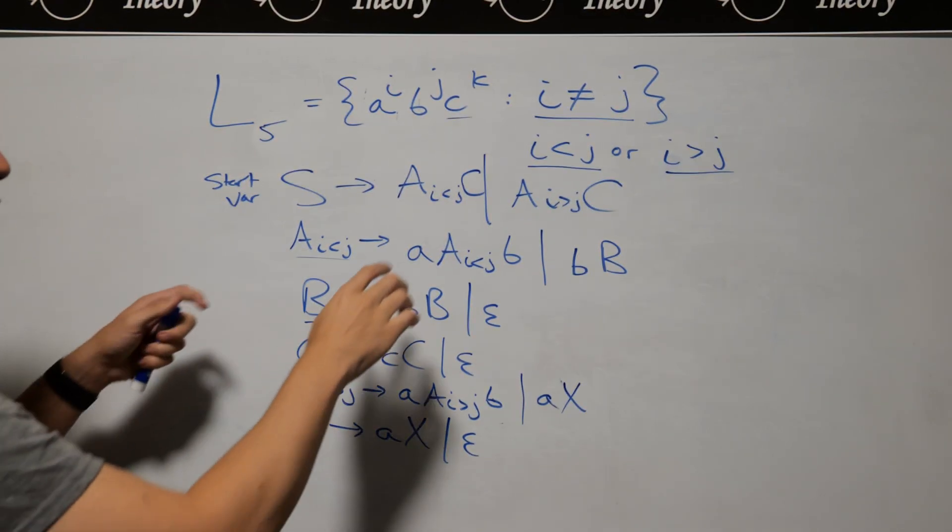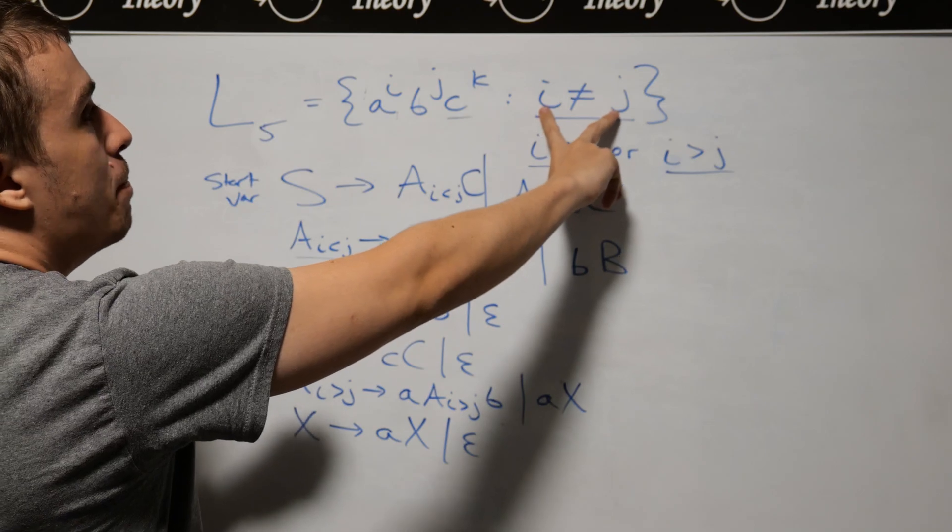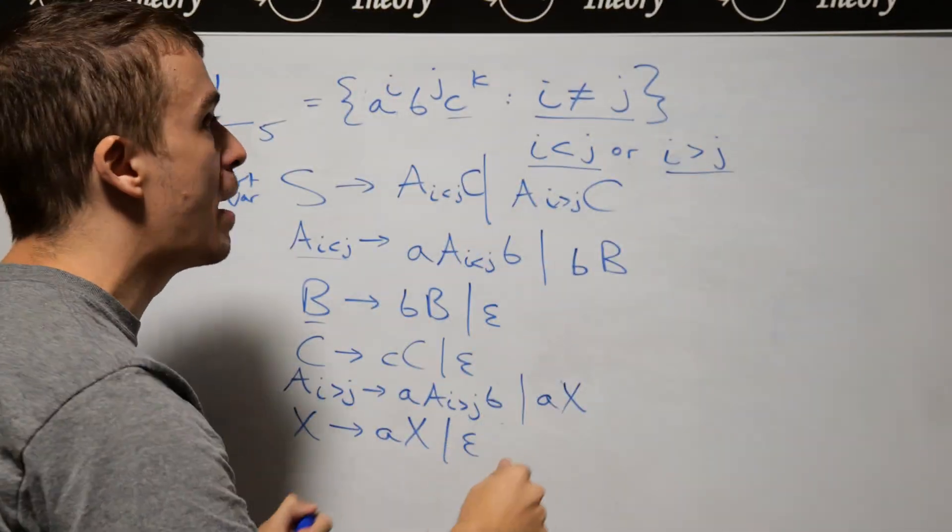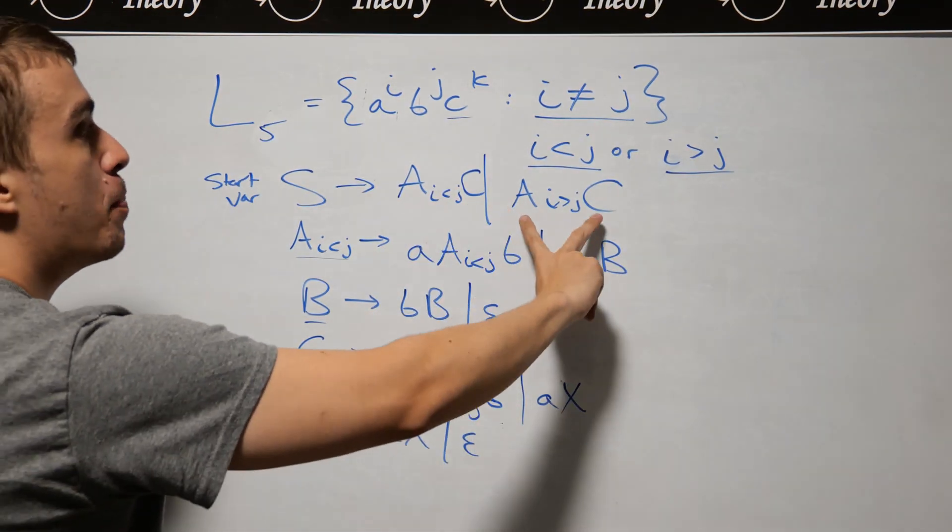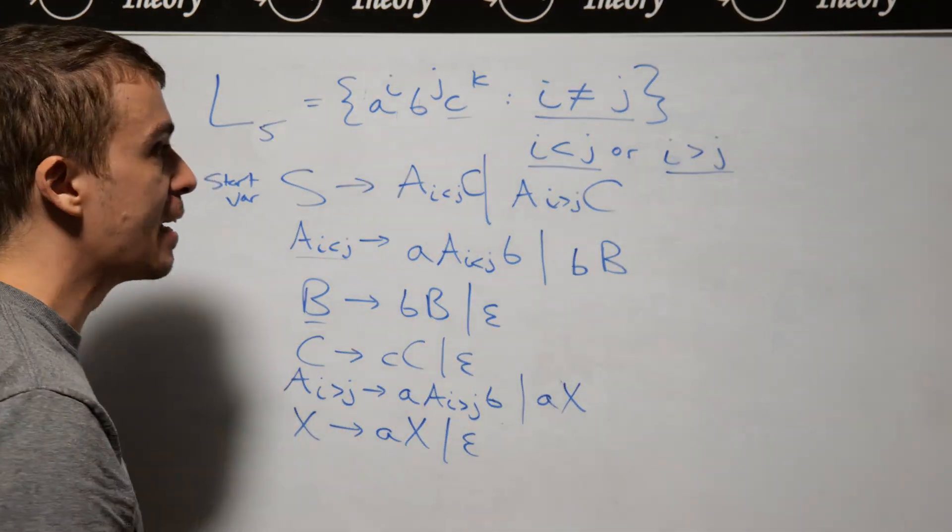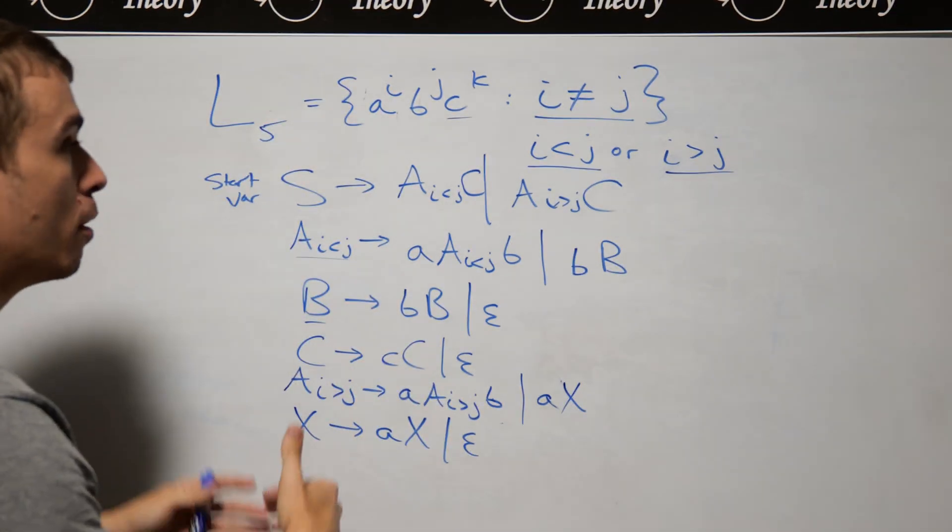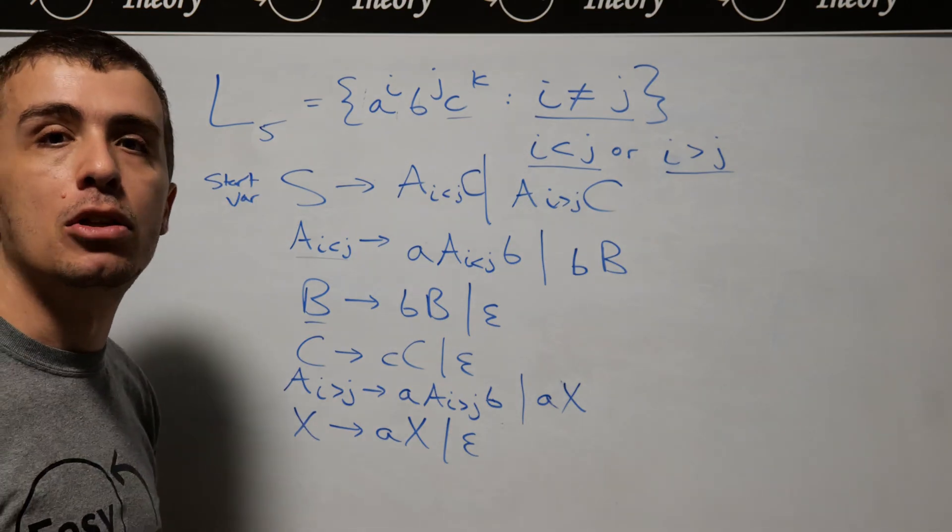one is less than the other or vice versa. We're dealing with both cases independently, allowing ourselves to handle each specific case to generate the strings in that particular situation.